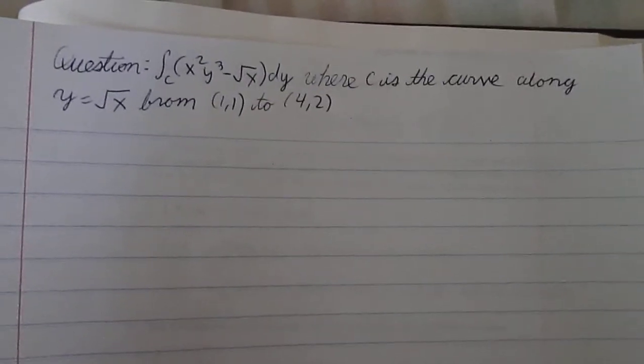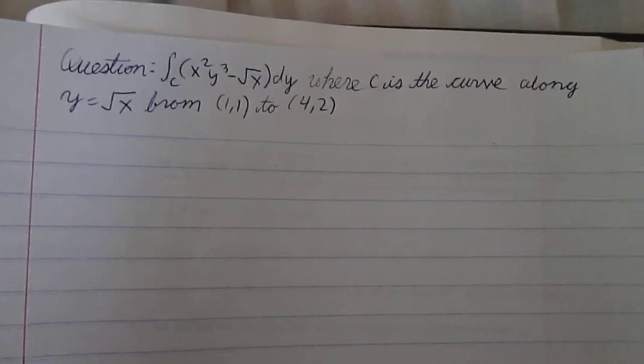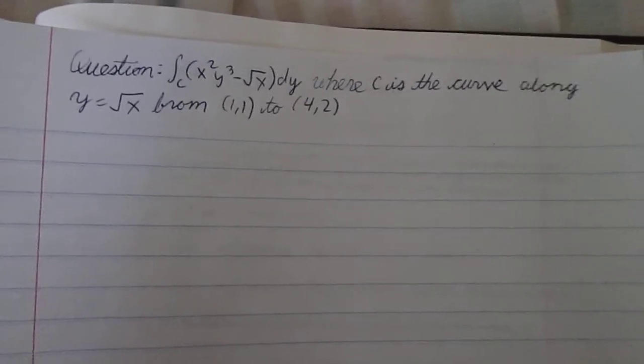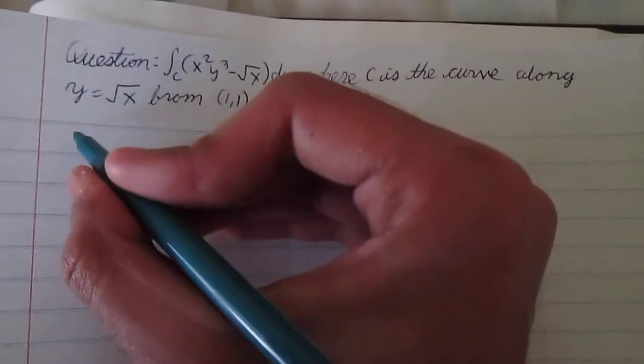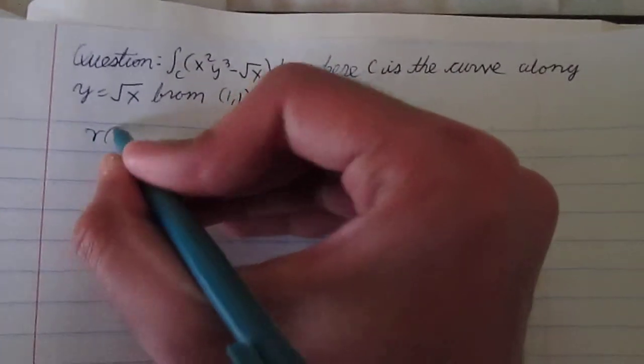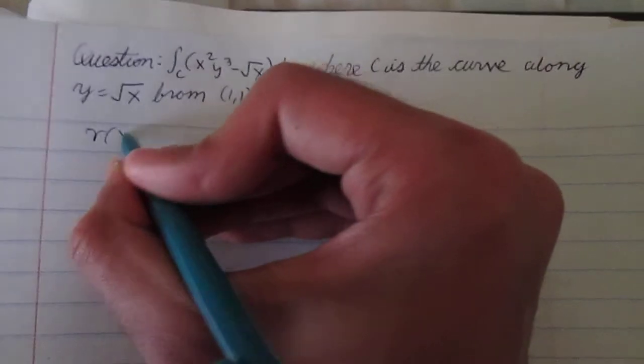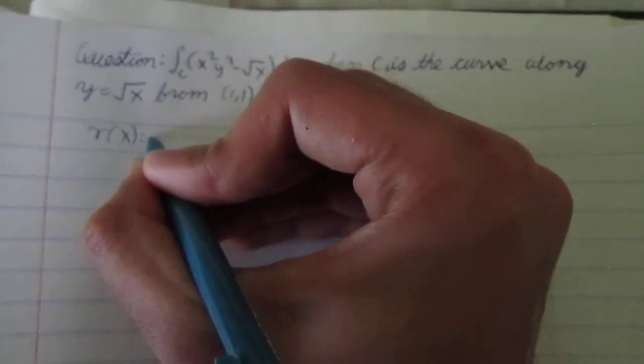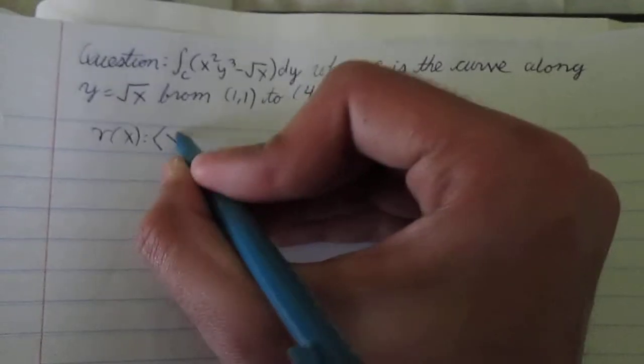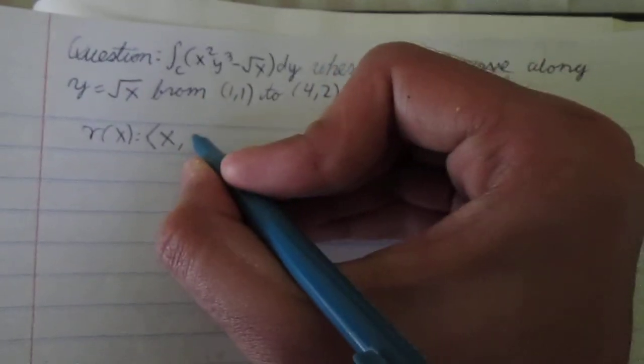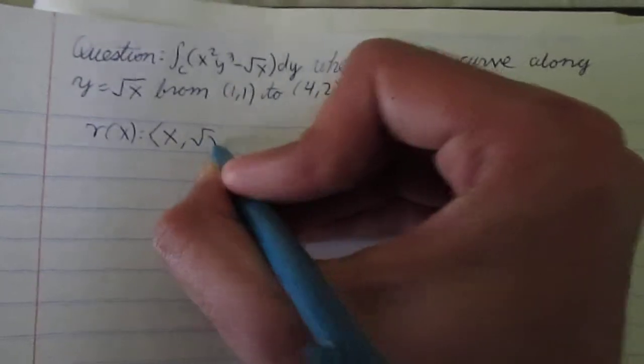So we have to start by parametrizing the curve. Well, there is a natural parameter which is just in terms of x. I could write it out as r of x, which is our x coordinate is just x, and the y component is y, which is square root of x.